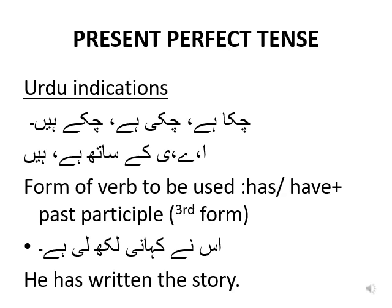The verb to be used for present perfect tense is the past participle, also called the third form of the verb. With that we use two helping verbs: either 'has' or 'have'. The sentence ends at choti 'hai', meaning it is present perfect tense, and the translation is 'he has written the story'. We have used the past participle 'written' — the third form of the verb — and 'has' because of the subject 'he'.